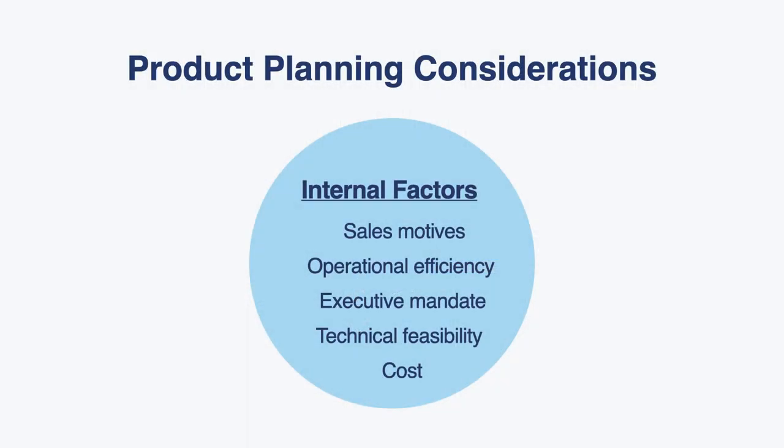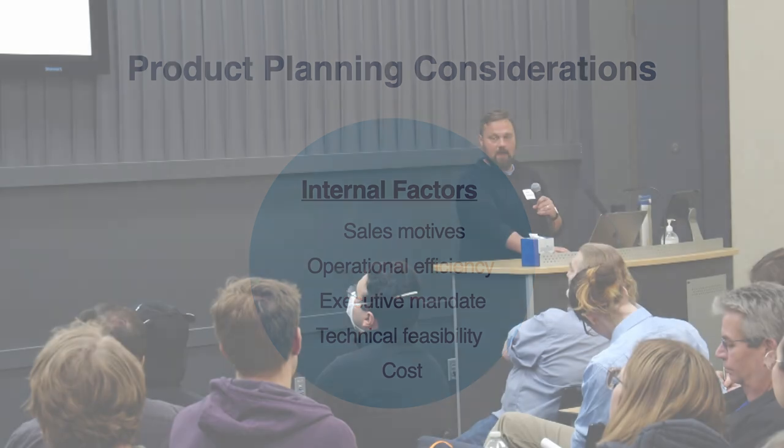Stepping back, different considerations that teams take when planning what features to build: obviously there's a sales motive, and that makes sense because a business needs to make money. Sometimes it's driven by operational efficiencies or consolidation. Sometimes it comes down to an executive mandate. Sometimes it's really a question of technical feasibility, or cost — opportunities to do things a different way and remove costs from the organization.